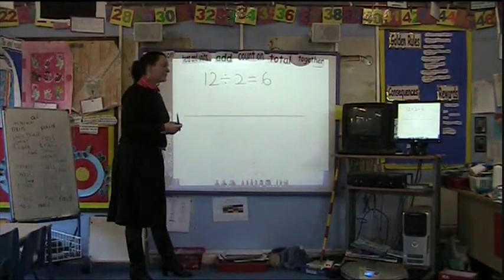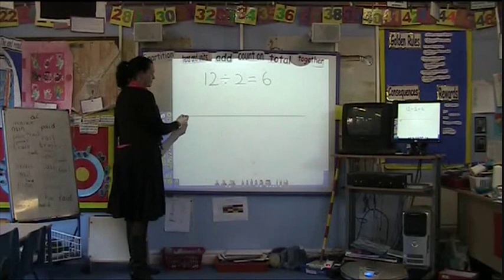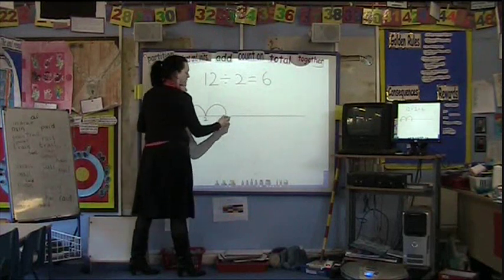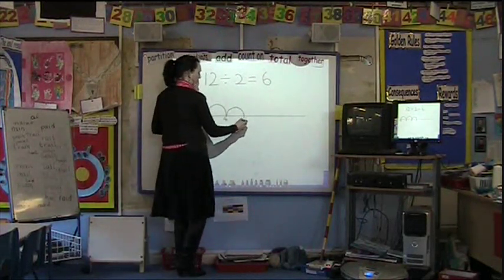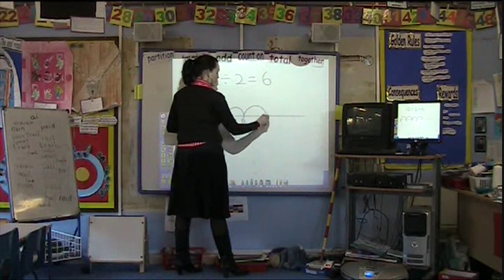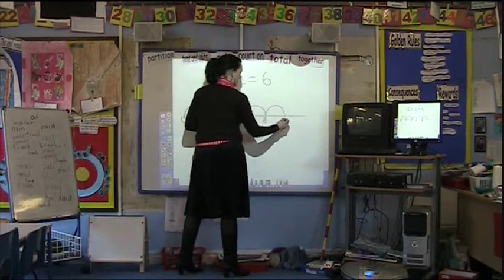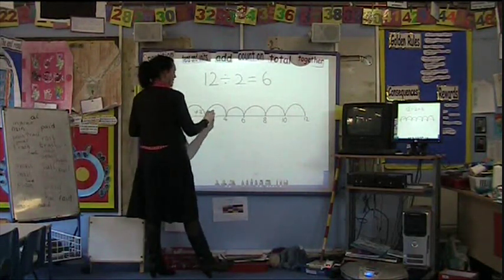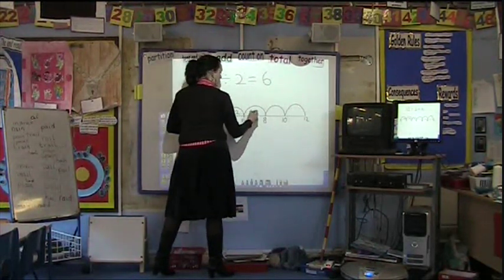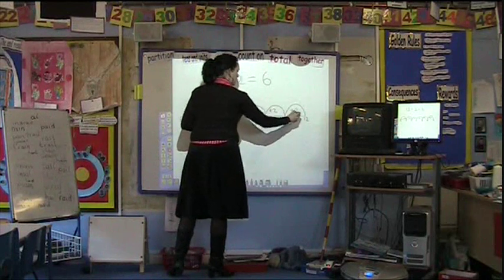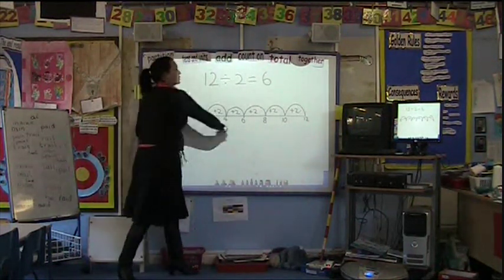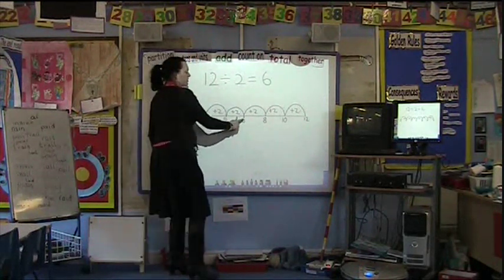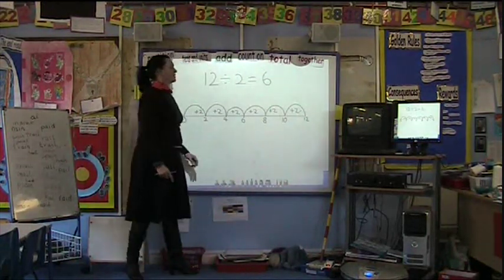We can show this on an empty number line. So if we started at zero and we counted in twos up to 12, each time keep adding 2. The children can see that I've got 12, and they're in groups of 2. And I've got one, two, three, four, five, six groups.